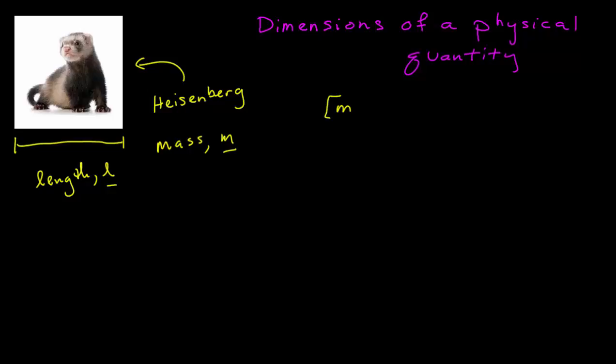If I want to know its dimension, I use this notation with the brackets. This refers to the dimension of m, which we call capital M for mass. And then this is the dimension of l, which is a length.